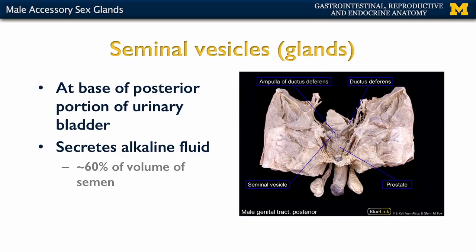Let's talk about the most proximal of these glands — the seminal vesicles. Let's locate them first. You can see right here, this is your bladder, and right here is the prostate, so the seminal vesicles are going to be more superior to the prostate and at the base of the posterior portion of the urinary bladder. These are going to compose a big portion — a big volume — of the semen, and they are particularly important because they secrete what we refer to as alkaline fluid.